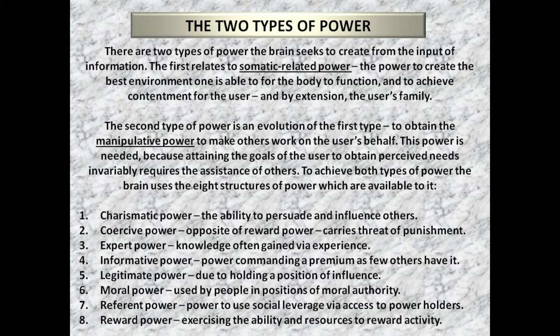There are two types of power the brain seeks to create from the input of information. The first relates to somatic-related power — the power to create the best environment for the body to function and to achieve contentment for the user and their family. The second type is an evolution of the first: to obtain the manipulative power to make others work on the user's behalf, as attaining perceived needs invariably requires the assistance of others. To achieve both types of power, the brain uses eight structures of power.